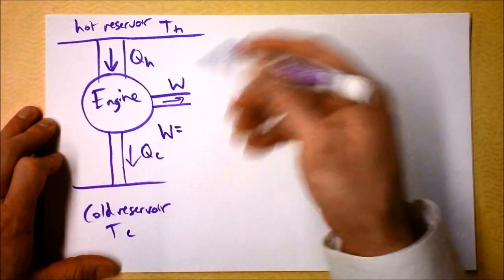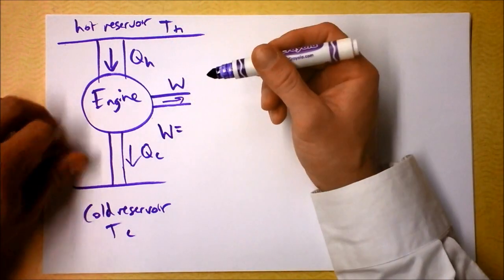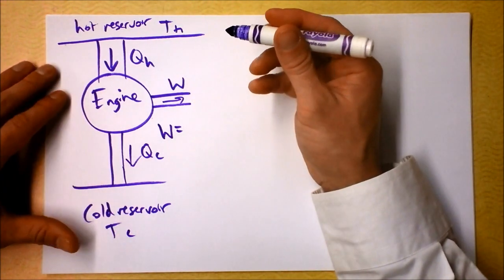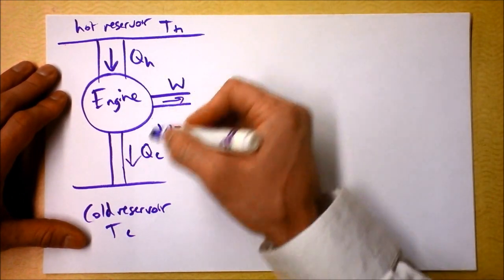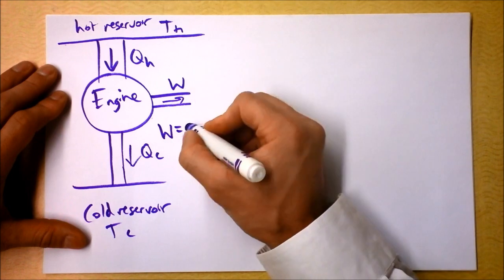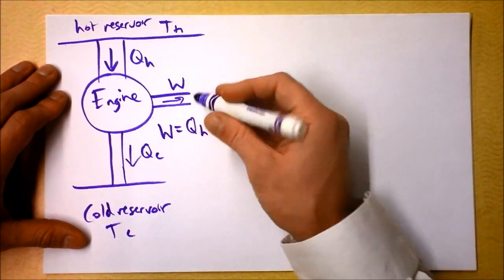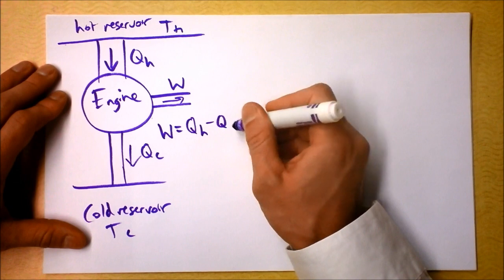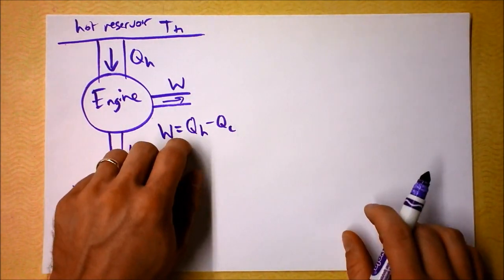The work that's done by this heat engine — we've got to have conservation of energy. The engine's not storing up any energy. So we're going to say QH is W plus QC. Then I could solve this for W and say it's just QH, the heat leaving the hot reservoir, minus the heat being wasted into the cold reservoir. So that's the work.